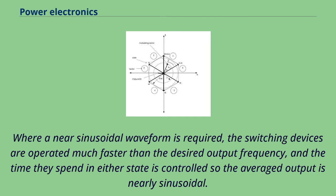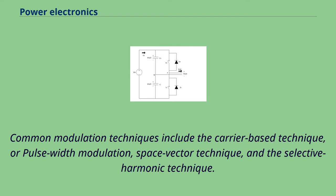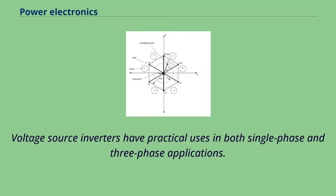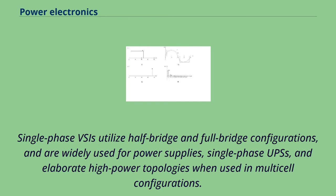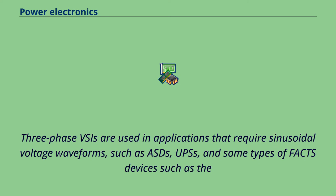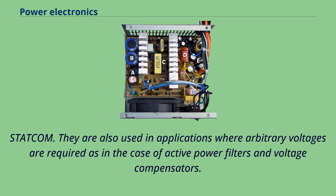Where a near-sinusoidal waveform is required, the switching devices are operated much faster than the desired output frequency, and the time they spend in either state is controlled so the averaged output is nearly sinusoidal. Common modulation techniques include the carrier-based technique or pulse-width modulation, space vector technique, and the selective harmonic technique. Voltage source inverters have practical uses in both single-phase and three-phase applications. Single-phase VSIs utilize half-bridge and full-bridge configurations and are widely used for power supplies, single-phase UPSs, and elaborate high-power topologies when used in multi-cell configurations. Three-phase VSIs are used in applications that require sinusoidal voltage waveforms, such as ASDs, UPSs, and STATCOM devices.